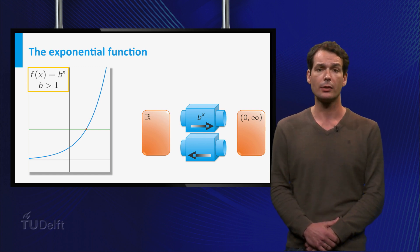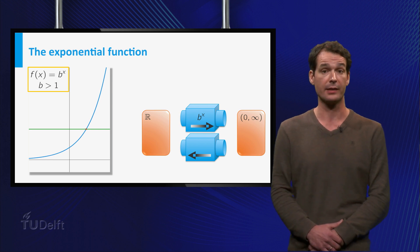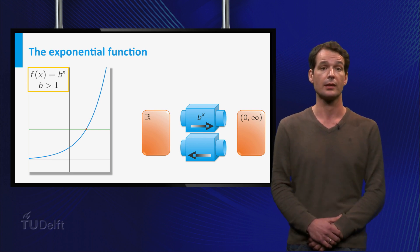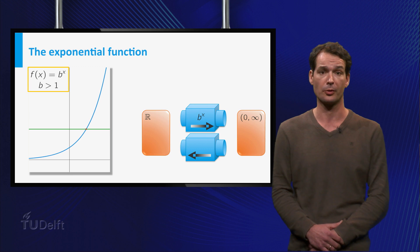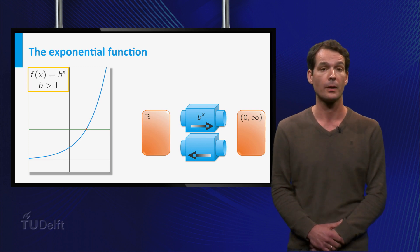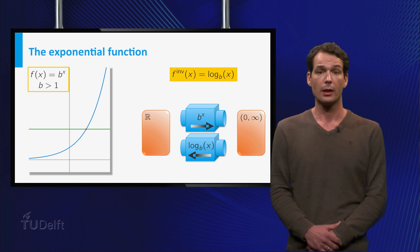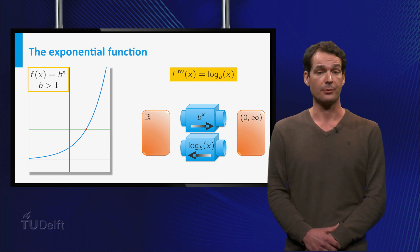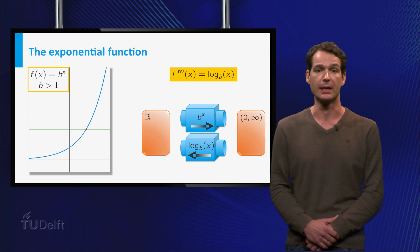The range of this function consists of all positive numbers. If we look at the graph of b to the power x, we see that it satisfies the horizontal line test — that is, the graph intersects a horizontal line in at most one point. So from the previous video, we know that f has an inverse function. This inverse is called the logarithm in base b.